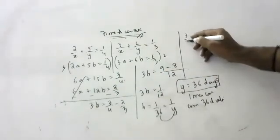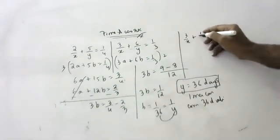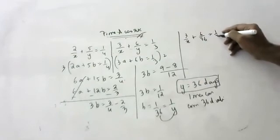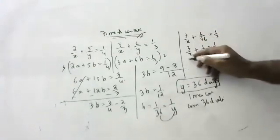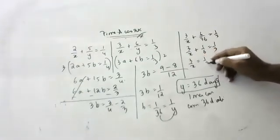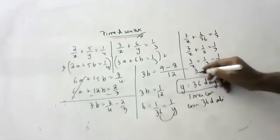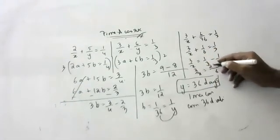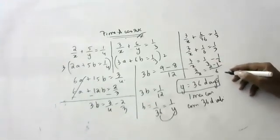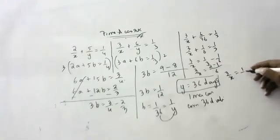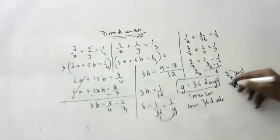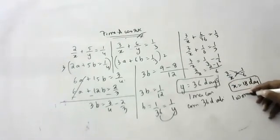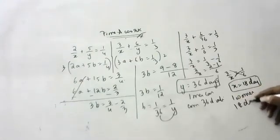Substituting b = 1/36 back to find a: 2a + 5/36 = 1/4, so 2a = 1/4 − 5/36 = 9/36 − 5/36 = 4/36 = 1/9, giving a = 1/18. So 1/x = 1/18, meaning x = 18. One woman alone can complete the piece of work in 18 days.